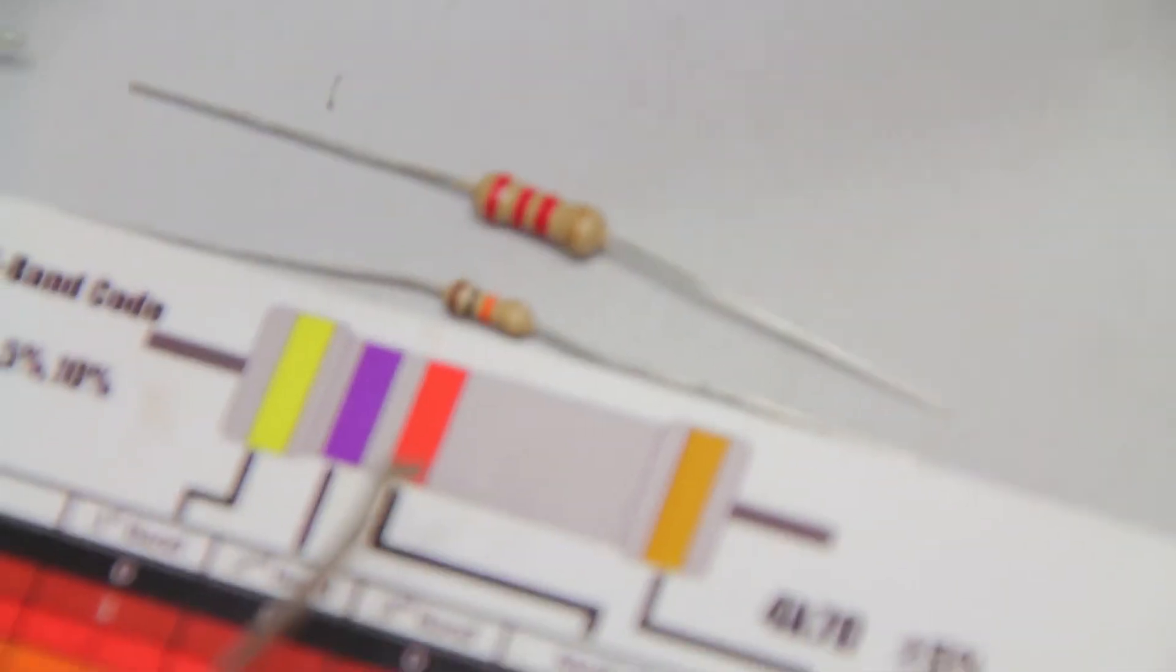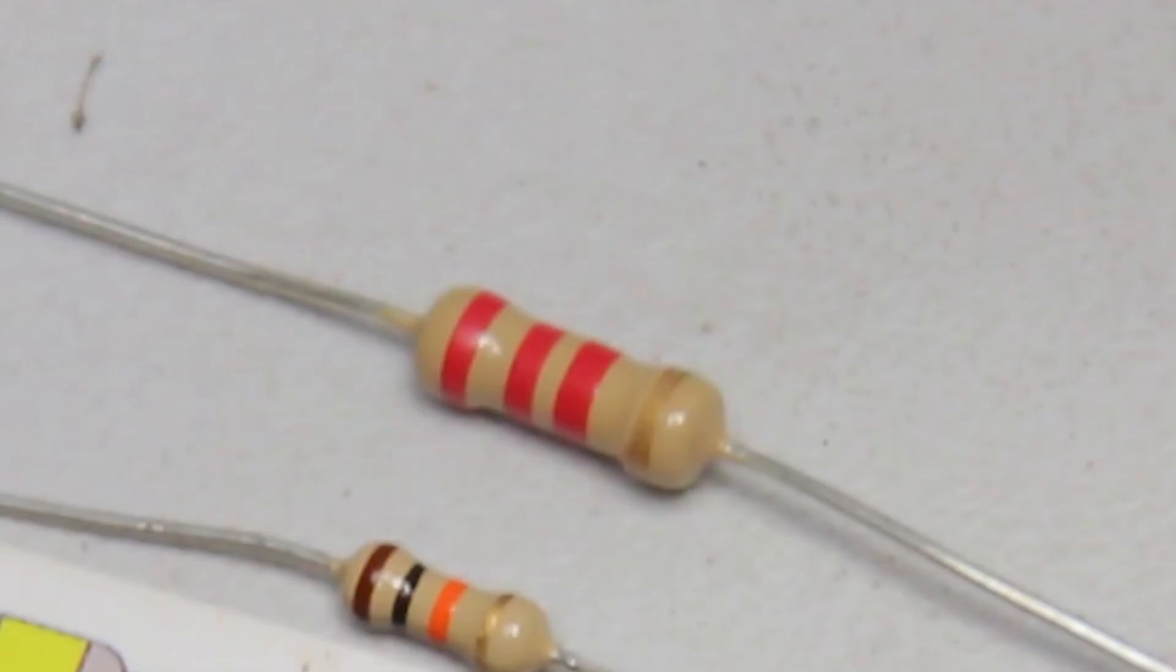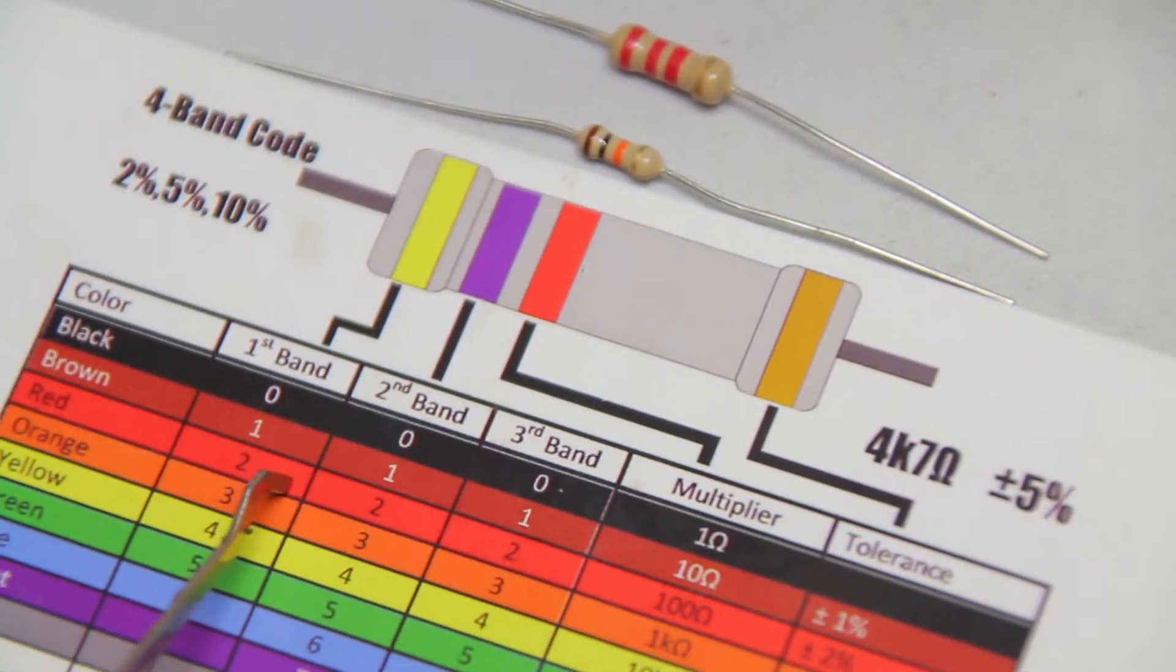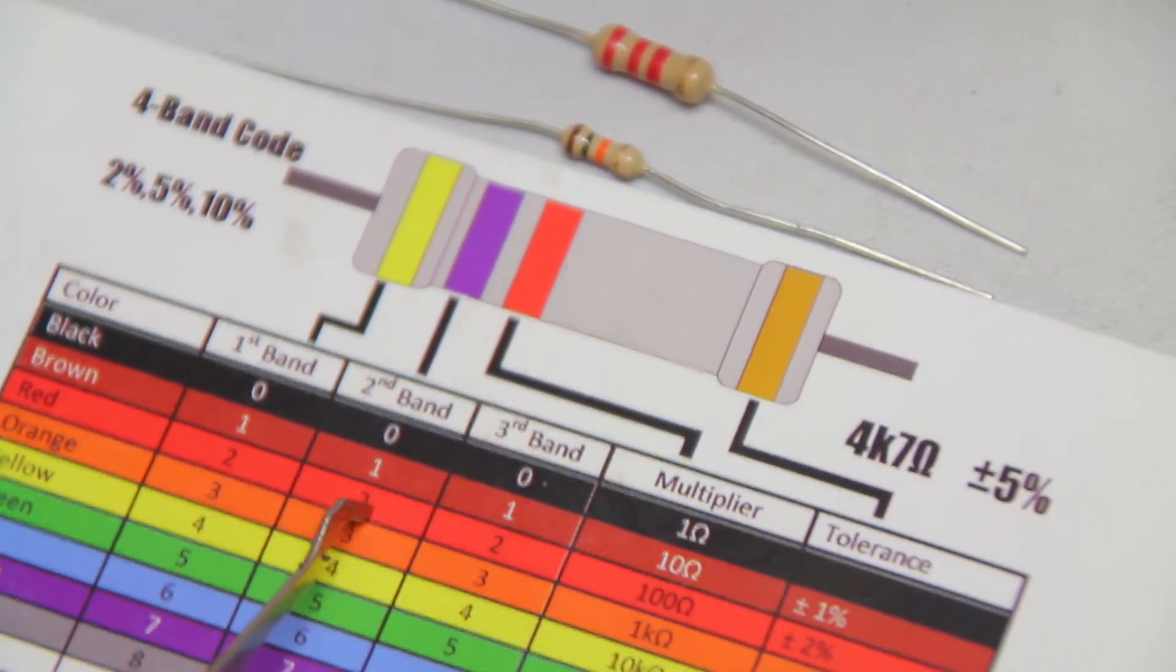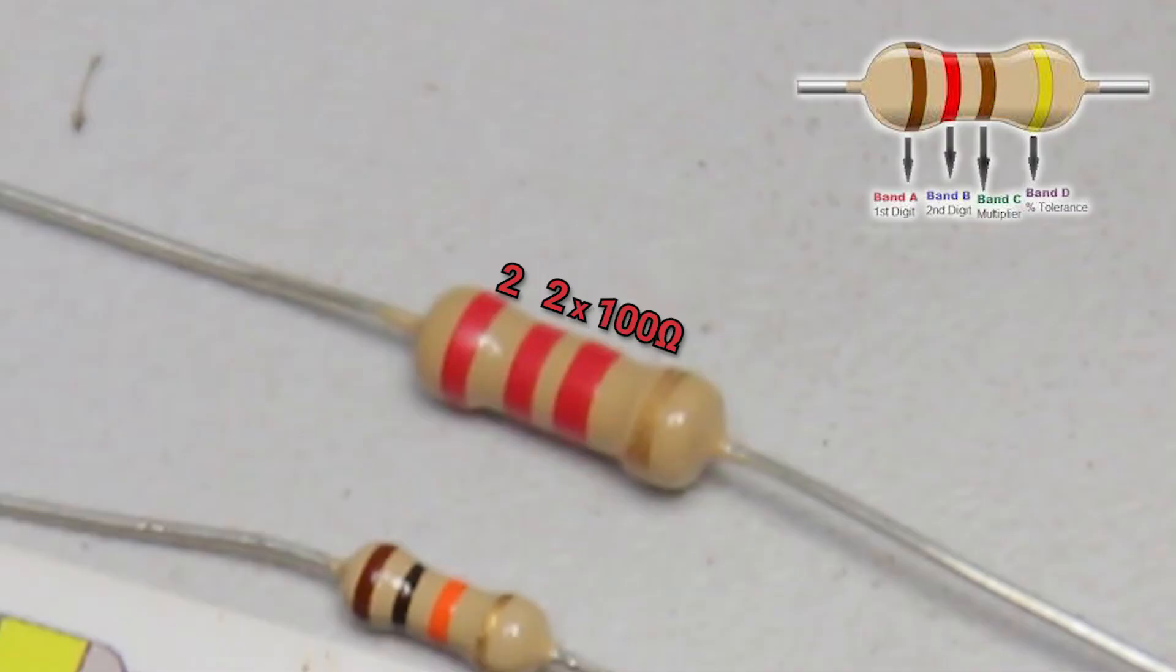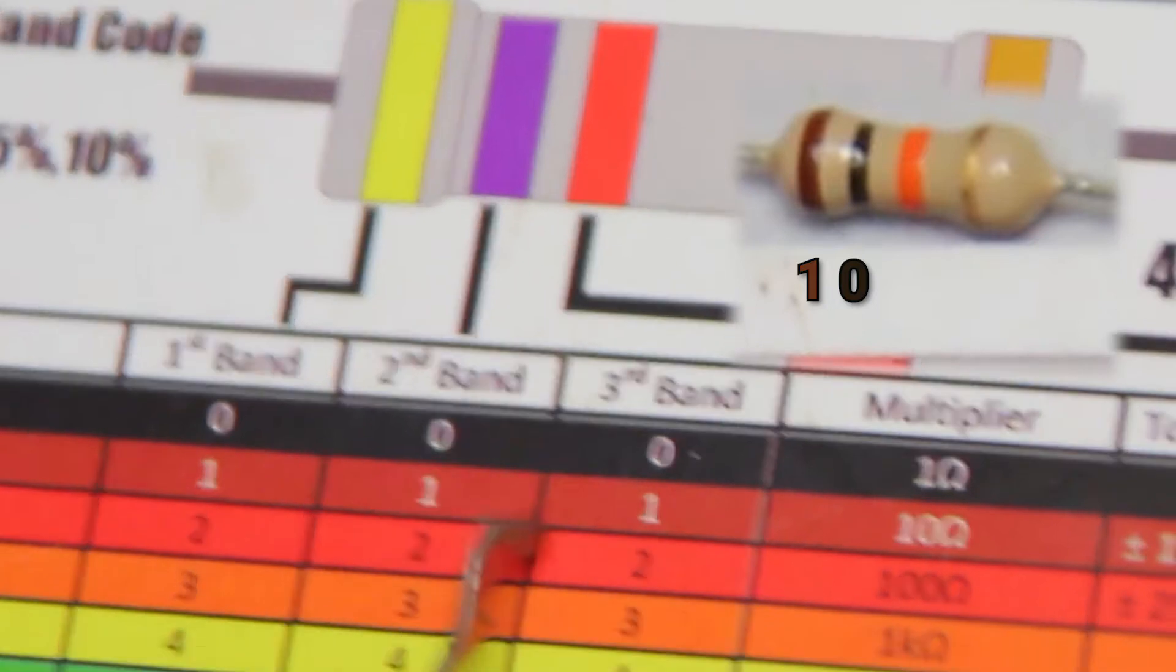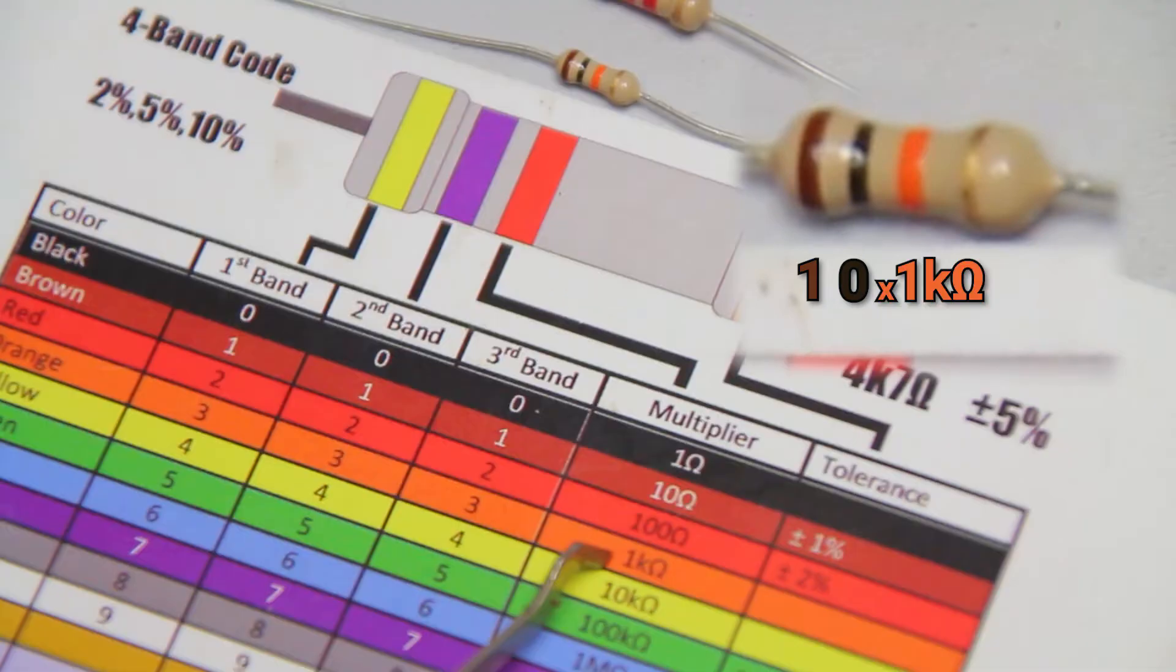And maybe you're thinking, how do I differentiate between these resistors? Well, I'm gonna teach you. So you see those lines? We've got three red lines. The first red line means a 2, the second red line means a 2, and the third line means a 100 ohm. So this means 22 times 100 ohm equals 2200 ohms. And for the other resistor, we have brown which means 1, a black that means 0, and an orange that means 1k ohm. That means 10,000 ohm.